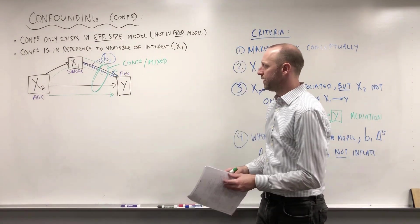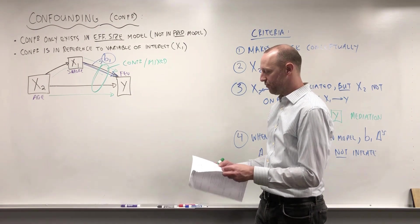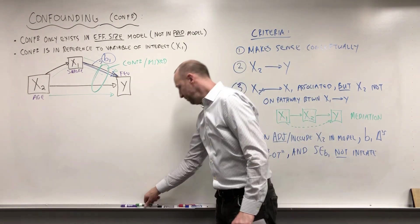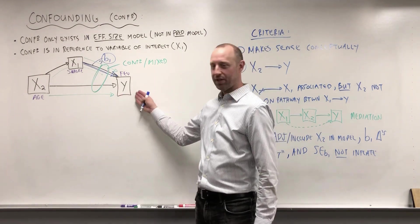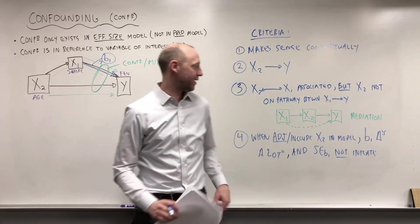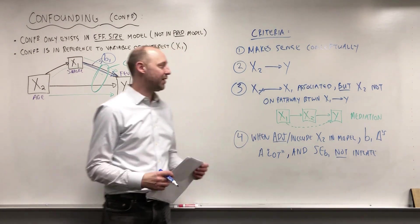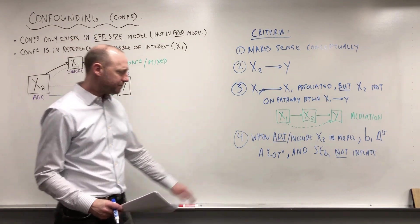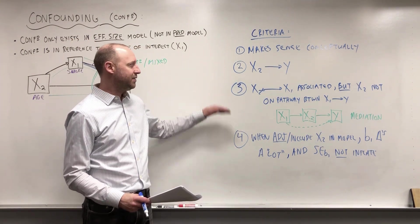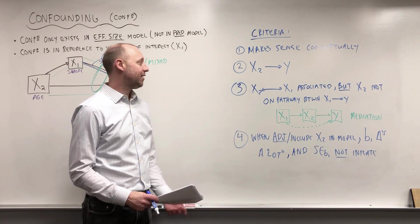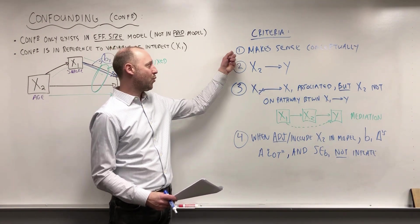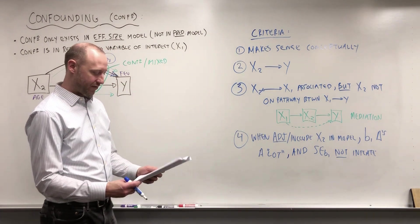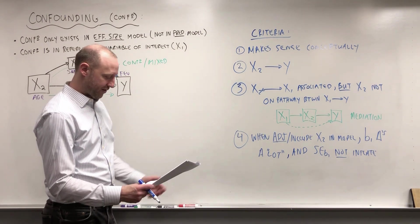So this is the idea conceptually of what confounding is and what confounding looks like. I really want to stress the reminder here, the conceptual understanding is more important than just numerically what's happening. But looking at numerically how confounders behave can help confirm confounders or help us explore the idea of confounding if we don't know what makes sense as much, if it's a much newer area of research and we don't understand as well what variables should be confounders.